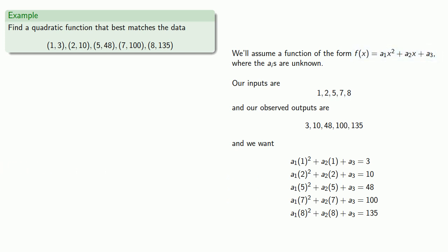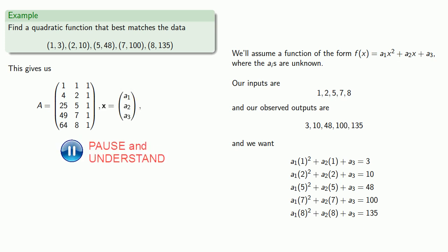And so we can obtain our coefficient matrix A, our column vector of the unknowns A1, A2, A3, and our constant vector of the outputs. And we want to minimize AX minus B.